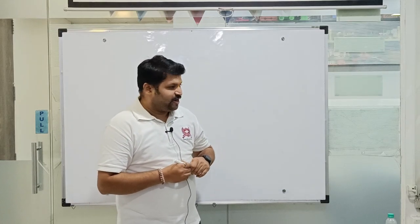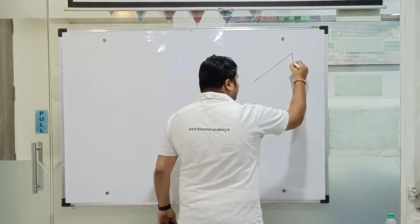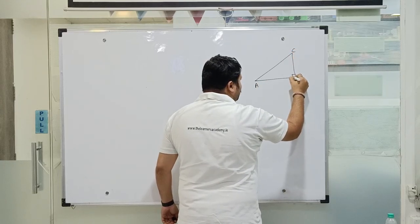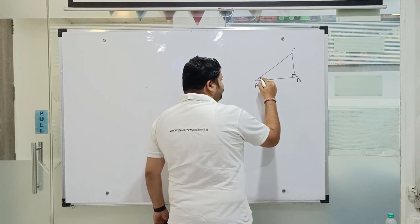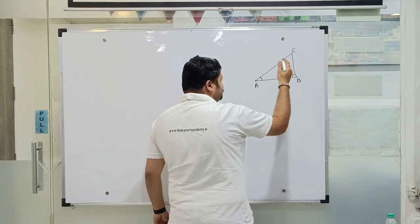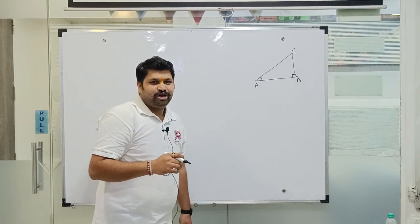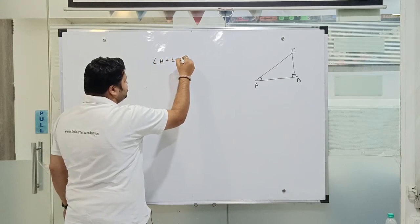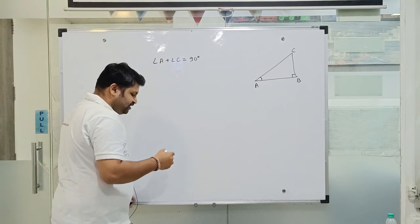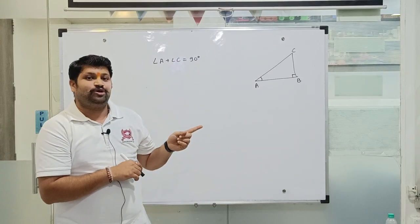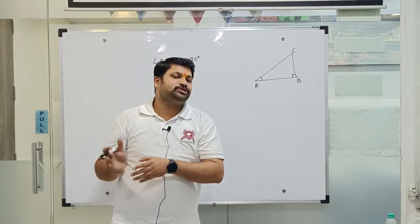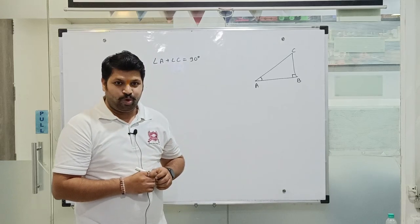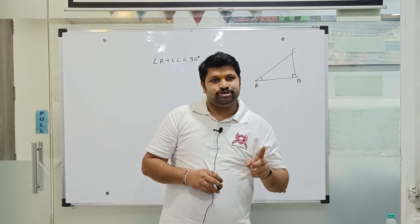This makes a lot of sense because trigonometry is based on right angle triangles. So if I have a triangle ABC where angle B is a right angle, then obviously angle A and angle C are going to be complementary to each other, meaning angle A plus angle C is equal to 90 degrees. This relationship between the two angles gives rise to a special relationship between their trigonometric ratios.